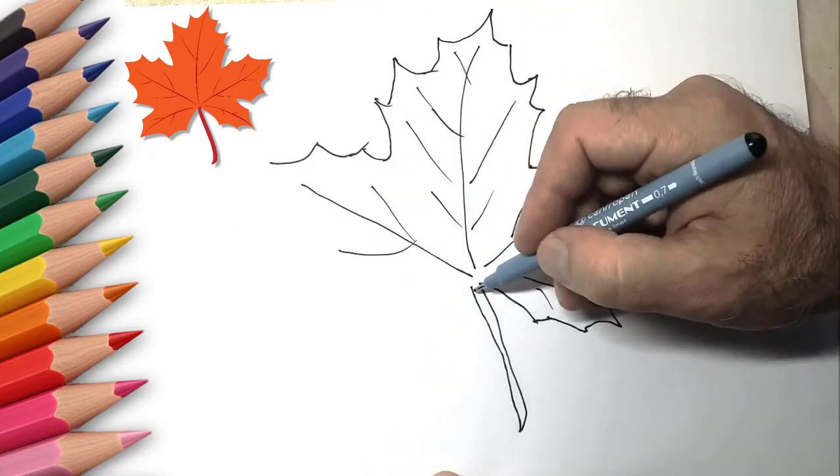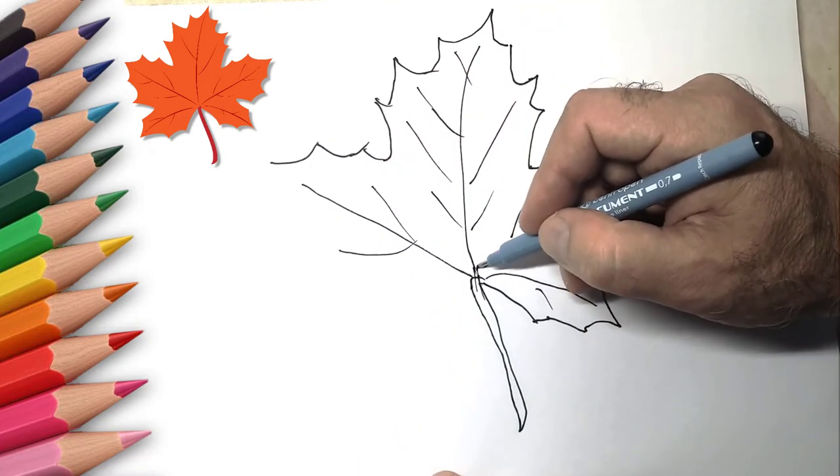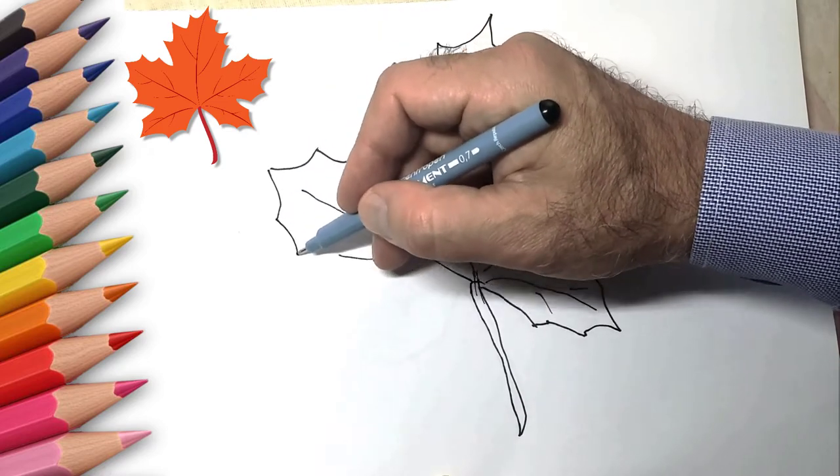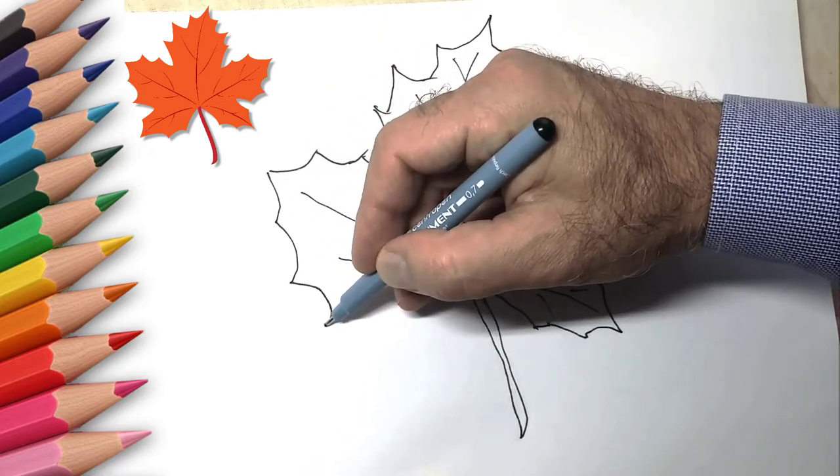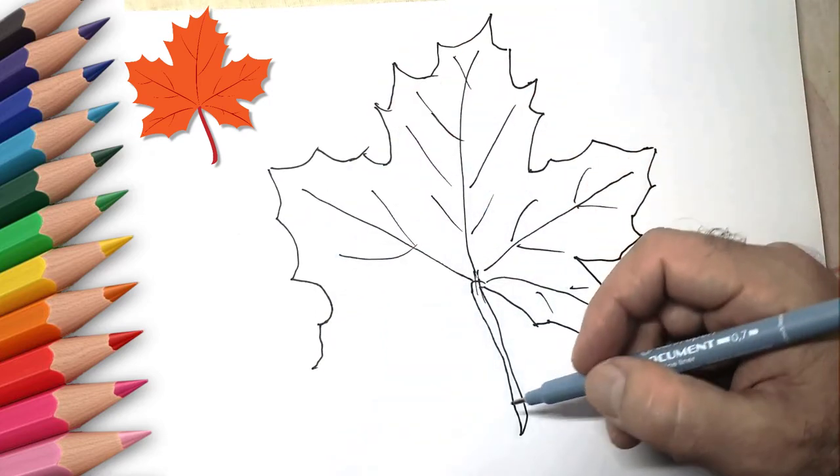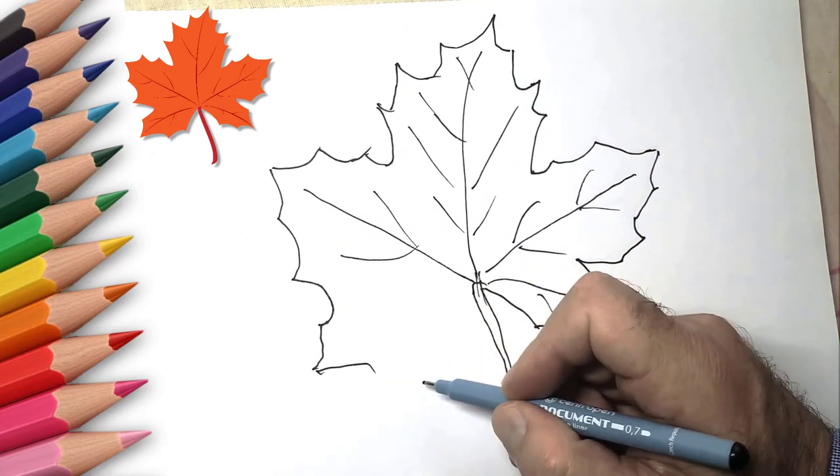We drew a maple leaf. See again how to draw a maple leaf. Paint this leaf. It is orange or light orange. You can look at the leaves you found in the garden or park and draw just such leaves.